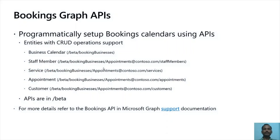Bookings also has a public-facing API which is currently in beta, exposed as part of Microsoft Graph APIs, allowing you to manage Bookings mailboxes programmatically. Bookings Graph APIs can be used like any other Microsoft Graph APIs using user access tokens. These APIs support basic CRUD operations for all Bookings entities like calendar, services, service providers, appointments, and customers. Using these Graph APIs, you can build a custom application for Bookings that suits your needs. Support for self-serve booking scenarios is not yet available on these Graph APIs. For more details, visit the Microsoft Graph support documentation.